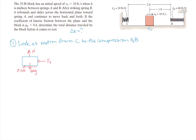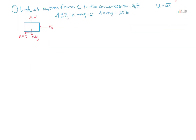I'm going to solve this using work-energy methods. First, let's find N because I need that for friction. Looking at the vertical direction, N minus mg equals zero, so N equals mg equals 25 pounds. That means our friction force is 0.4 times 25, which gives us 10 pounds. We'll use that in our work calculation.